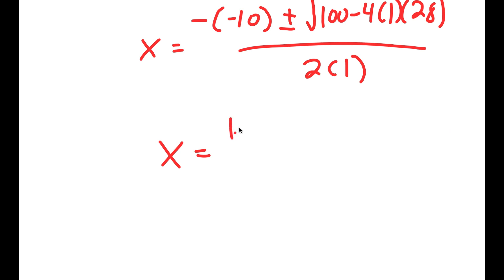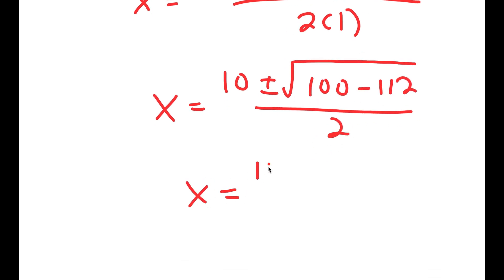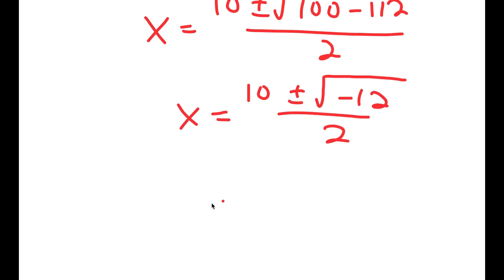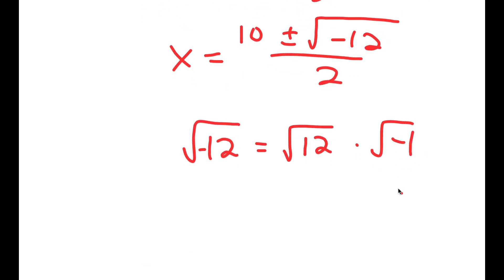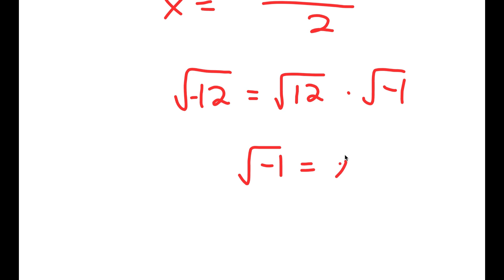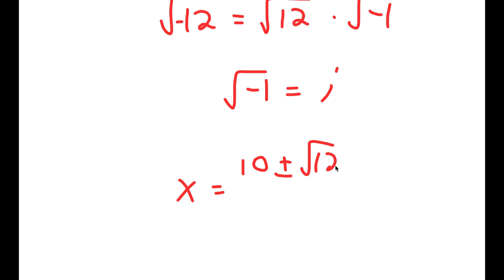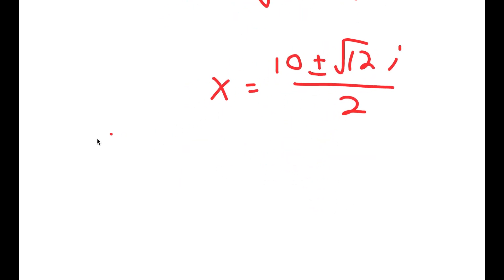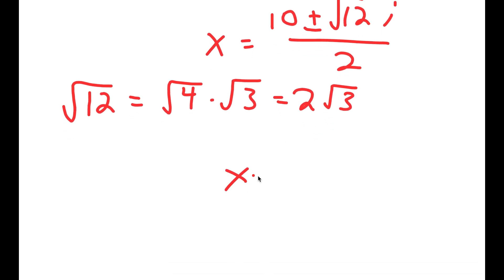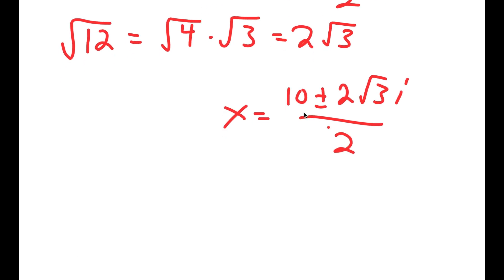This equals 10 plus or minus the square root of 100 minus 112 over 2, which equals 10 plus or minus the square root of negative 12 over 2. The square root of negative 12 equals the square root of 12 times the square root of negative 1, and the square root of negative 1 is the imaginary number i. So I get x equals 10 plus or minus the square root of 12 times i over 2. We can simplify: the square root of 12 equals the square root of 4 times the square root of 3, and the square root of 4 is 2, so I get 2 root 3. This means x equals 10 plus or minus 2 root 3 i, over 2. Dividing through: 10 over 2 is 5, and the 2's cancel, giving 5 plus or minus root 3 i.